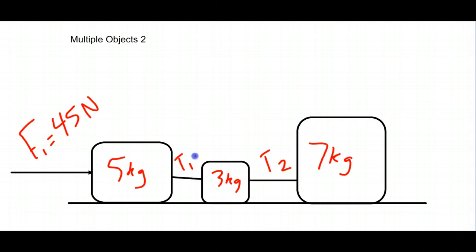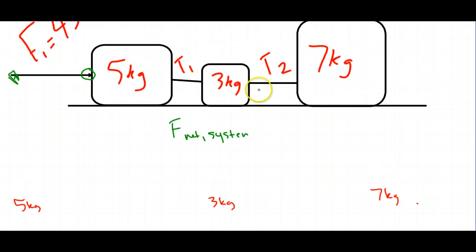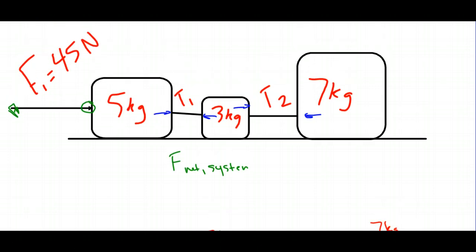A slightly more difficult problem — remember to switch the arrow so it points the other way. We'll do the same thing as before: Fnet of the system first, then deal with the 5, 3, and 7 kilogram objects individually. The internal forces T1 and T2 cancel each other out within the system, so we can treat the system as a single blob and write a net force expression for it.